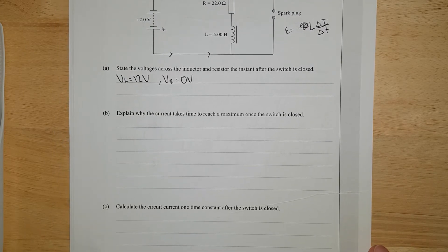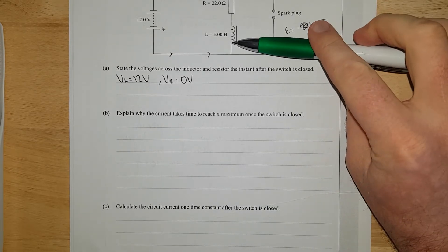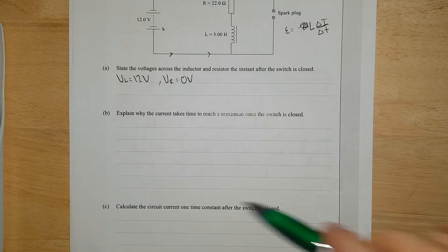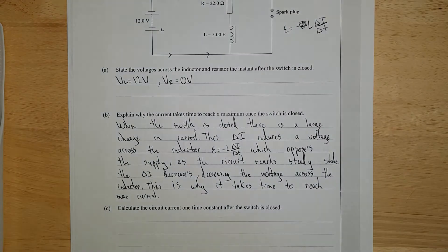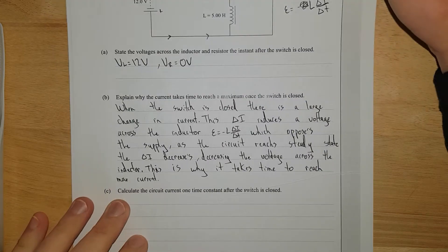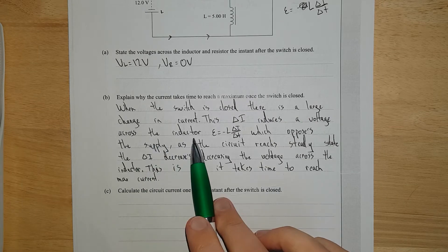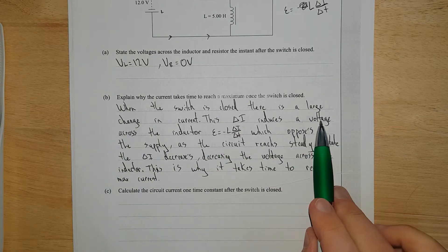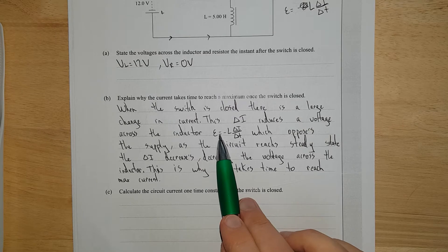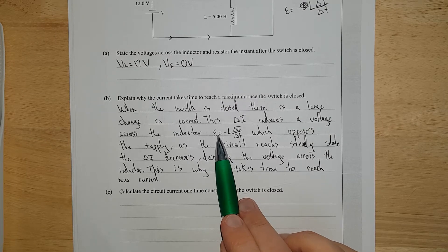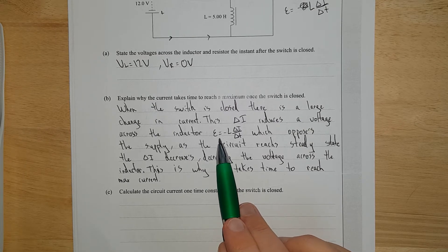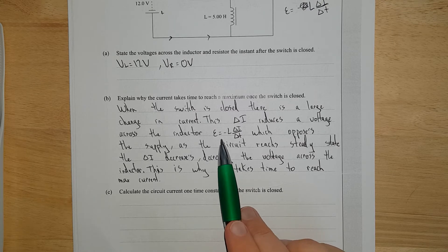Explain why the current takes time to reach the maximum once the switch is closed. I'll just pause it and then I'll explain it afterwards. So when the switch is closed, there's a large change in current. This change in current, delta I, induces a voltage across the inductor. Be careful, because you've got to say it induces a voltage. A lot of kids just say it induces a current that opposes the current that it supplies, and that skips a few steps of understanding.